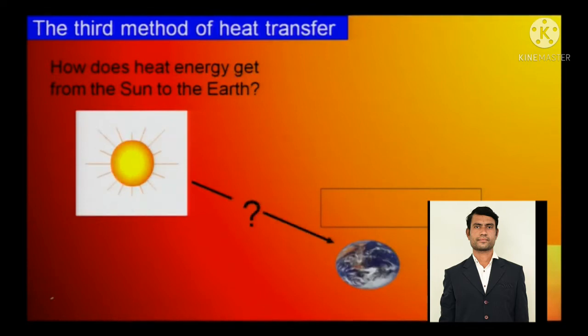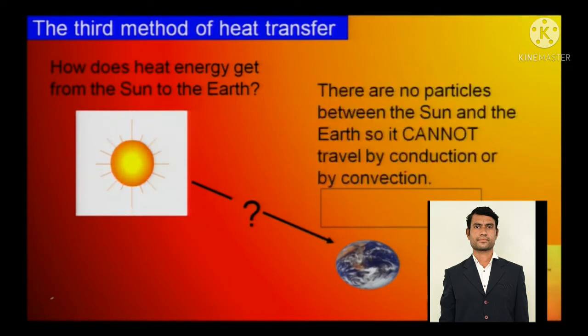How does the heat energy get from the sun to the earth? This is a very important concept. There are no particles between sun and the earth, so it cannot travel by conduction or convection.